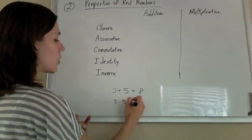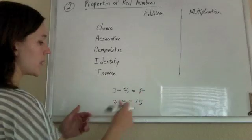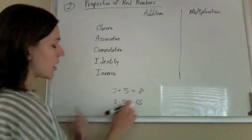Integers would be closed under multiplication as well, because if I multiply two integers, I get an integer.